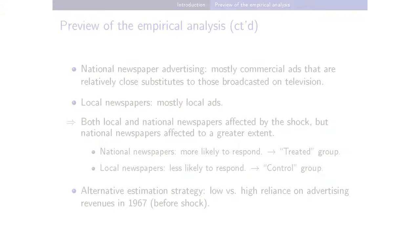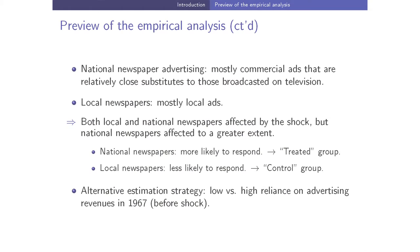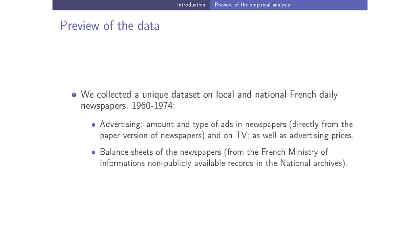Both national and local newspapers may have been affected by the shock, but national newspapers rely much more strongly on national ads that are close substitutes to TV ads, while the majority of ads in local newspapers are local in nature. As an alternative estimation strategy, I'll show results using newspapers with low reliance on advertising revenue as the control group versus those with high reliance before the shock in 1967.